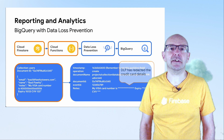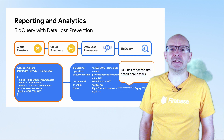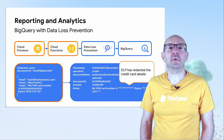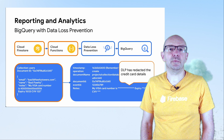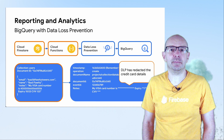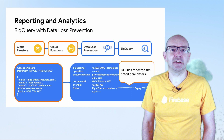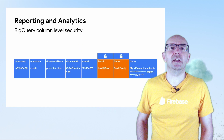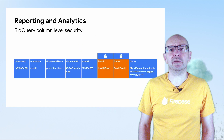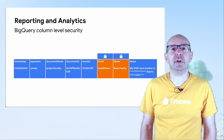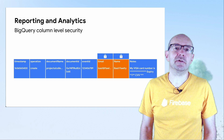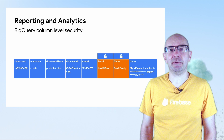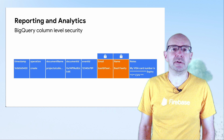DLP can identify and even redact sensitive information, so we can safely store our notes field with no fear of having sensitive information present. DLP can even redact information from images. If we still need to store this information in BigQuery, we can use column-level security so that we can still store sensitive data but only allow access to it from an authorized user.